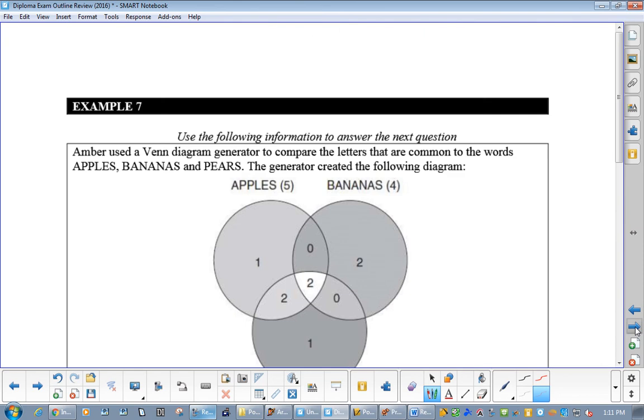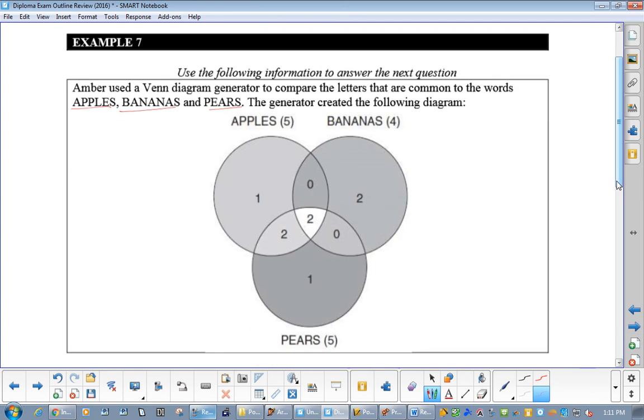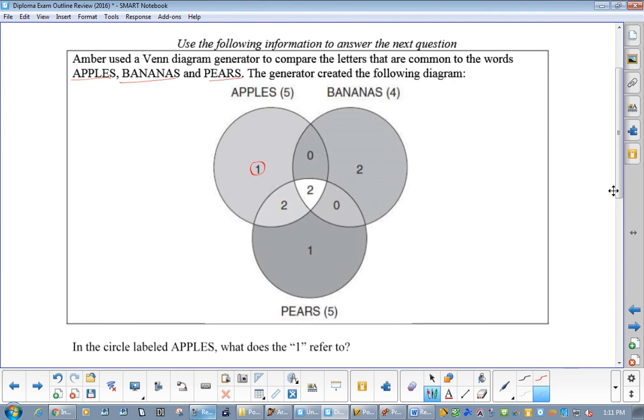Now, Amber used a Venn diagram generator to compare the letters that are in common. So, we got apples, bananas, pears. And they've labeled the letters that they have in common. Now, the question would be, there's one letter that apples and bananas do not have in common. What is it? L. Banana has two letters that are not in common with anybody else. N is one of them. And B.